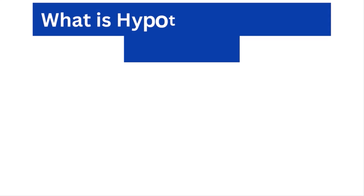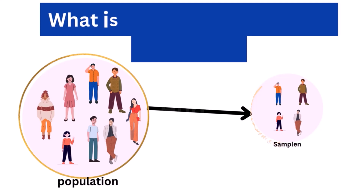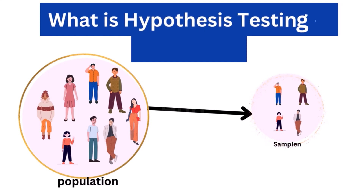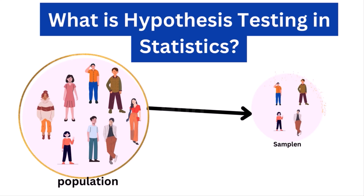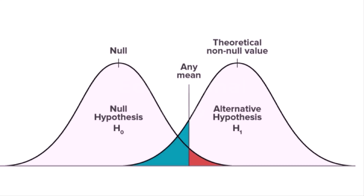First, what is hypothesis testing in statistics? Hypothesis testing uses sample data from the population to draw useful conclusions regarding the population probability distribution. It tests an assumption made about the data using different types of hypothesis testing methodologies. The hypothesis testing results in either rejecting or not rejecting the null hypothesis.